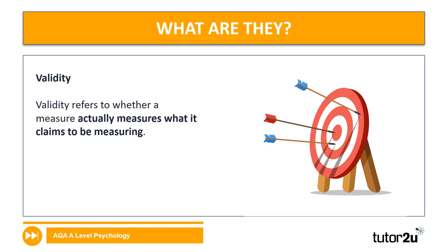The example I often use with students to demonstrate how validity and reliability interact is to think about the scales in a gym. My weight might be, let's say, 70 kilograms. If I go to the gym and step on the scales and the weight says 70 kilograms, that is a valid measurement because it's accurate. If the next day I go to the gym, nothing's changed, and it still says 70, that method is both accurate and also reliable — that's to say it's consistent. But what if my weight is 70 kilos and I step on the scales and it says 65, and the next day it also says 65? That method is not valid, but it is reliable.